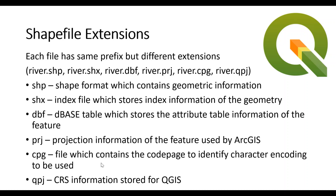We also have .cpg, which contains the coding information used to identify how the characters are encoded. The last one is .qpj, which is the CRS information — again the projection information, but this is used by QGIS. So QGIS and ArcGIS use two different extensions to extract and read the projection of a geographic feature. That's it for today. In the next video, I would like to show you how to create a shapefile in QGIS software.